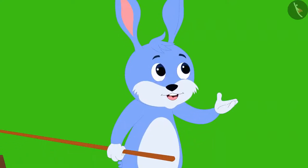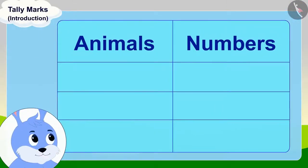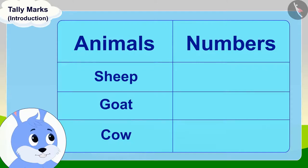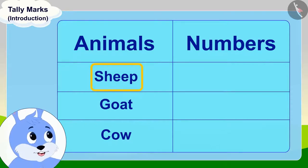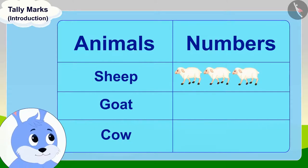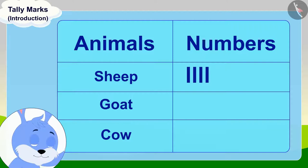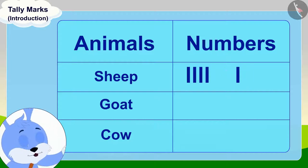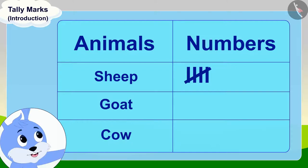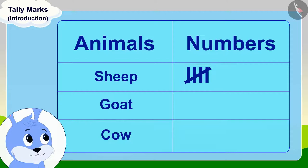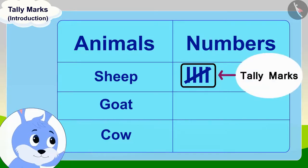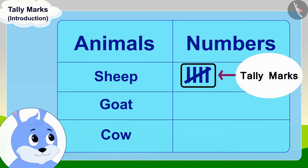Bunny explained: 'It is very easy. First, you make a table like this and write the names of all the things you have to count in it. Suppose you want to count your sheep first. You draw four lines like this for four sheep, and then for the fifth sheep, make a slant line across those four lines. We call these groups of five lines tally marks.'